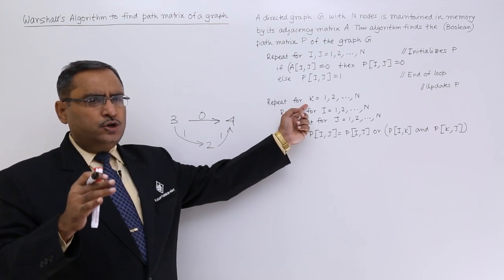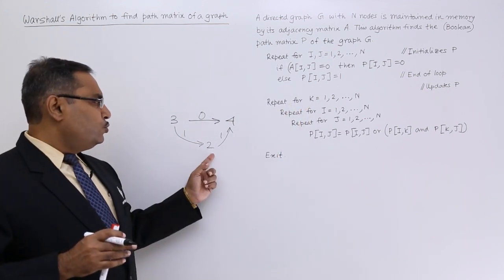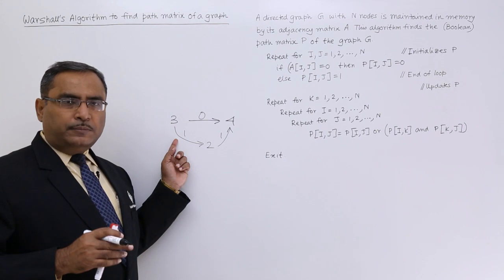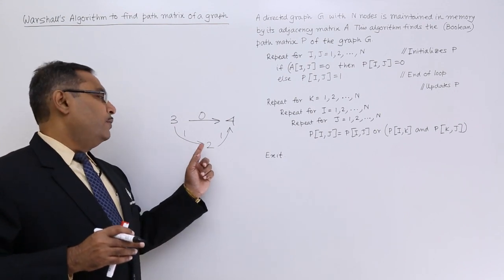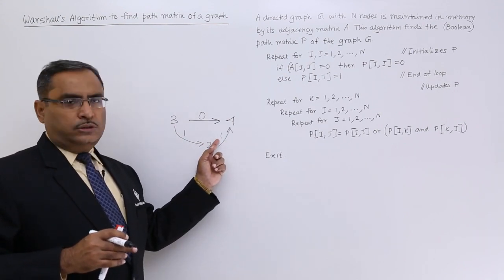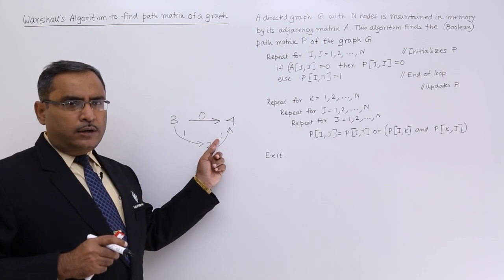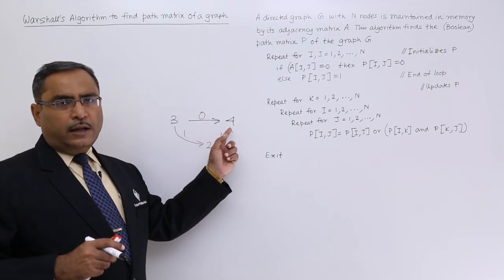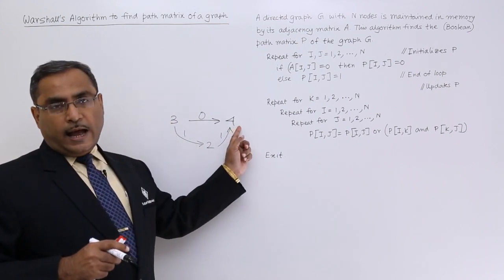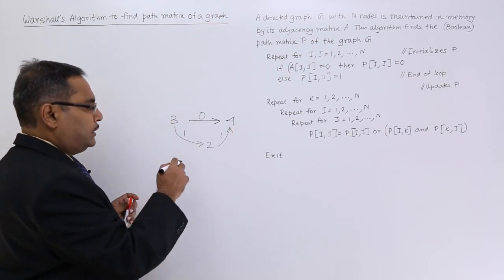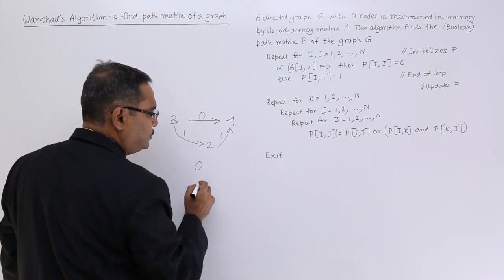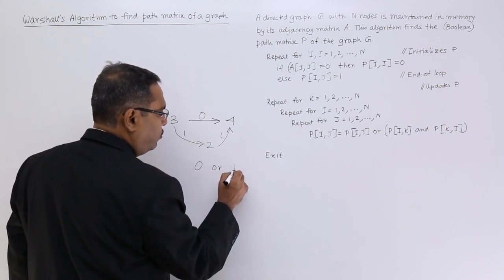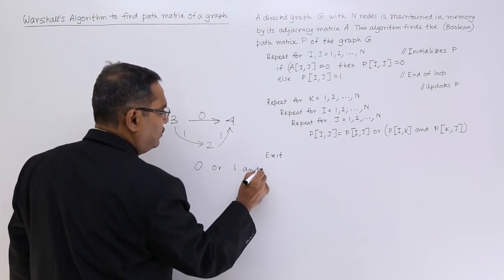From 3 to 2, there is a path, so the path matrix is containing 1. From 2 to 4, there is a path, so the path matrix is containing 1. It is true that through this, I cannot have a path, but through this, I can have a path. That is why I shall go for this in this way: that is 0 OR (1 AND 1). 0 OR 1 AND 1—1 AND 1 is 1, so I am getting 0 OR 1.